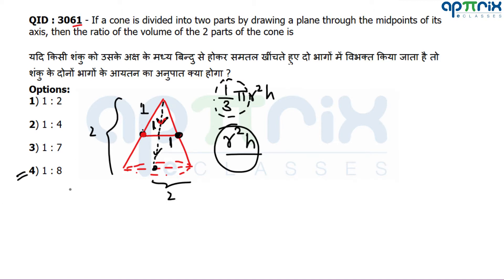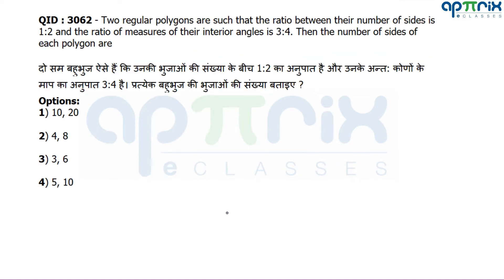The question asks for the ratio of the small cone to the remaining frustum part. The frustum volume is 8 minus 1 = 7. So the ratio of the two parts is 1 : 7.